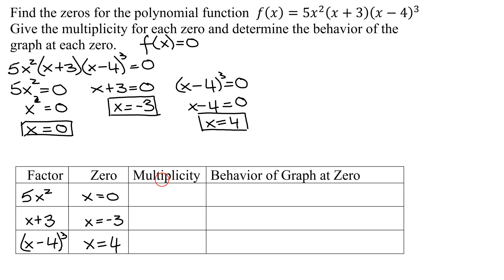Now looking at the multiplicity. The zero of x equals zero, how many times did the factor x occur here? It was x squared, so it occurred twice, so the multiplicity is two. For the zero x equals negative three, how many times did the factor x plus three occur? One time, so its multiplicity is one. Finally, the zero x equals four, how many times did the factor x minus four occur? Three times, so its multiplicity is three.